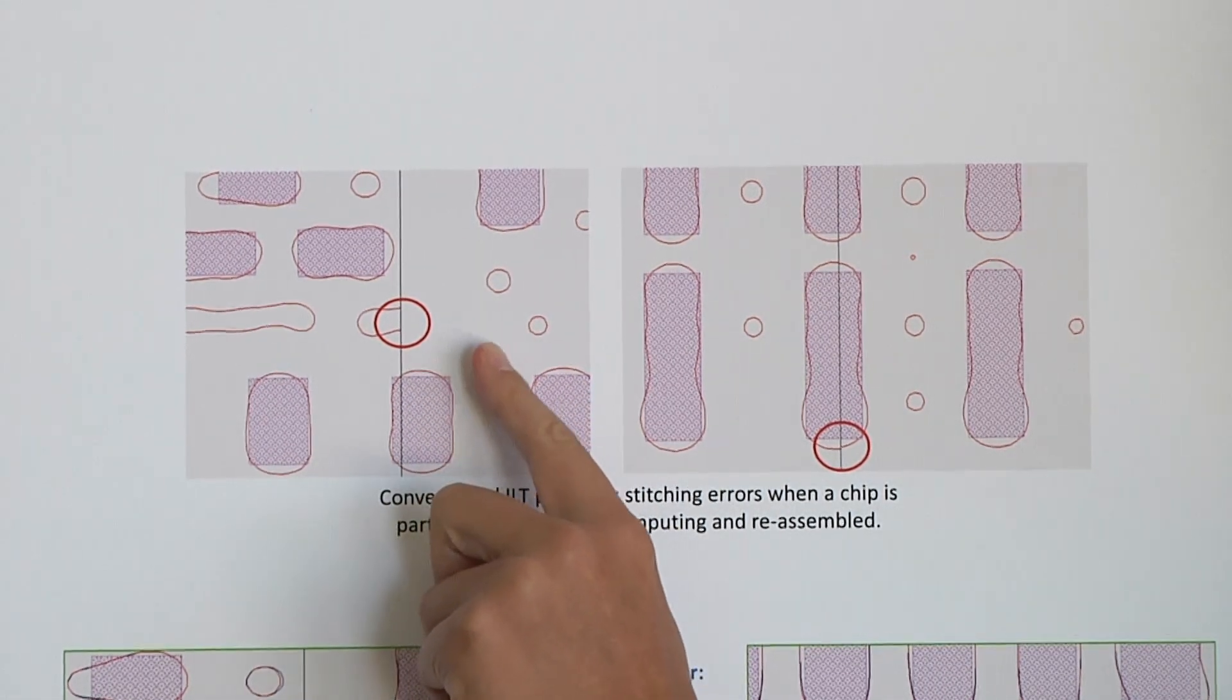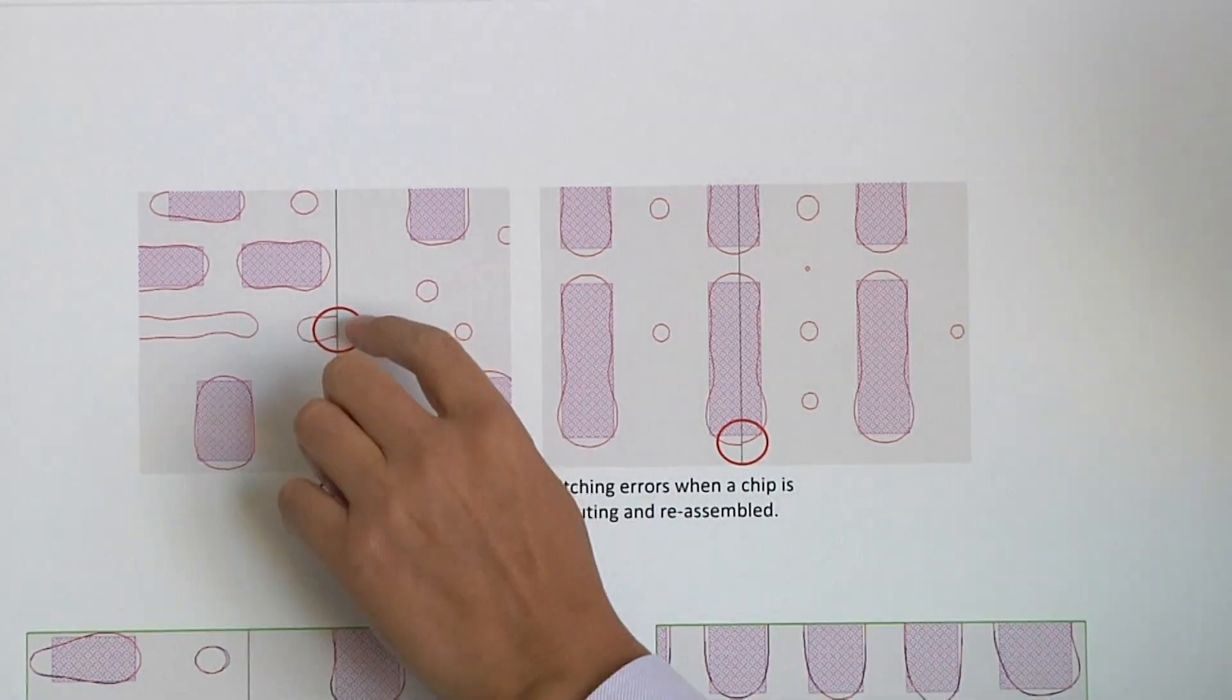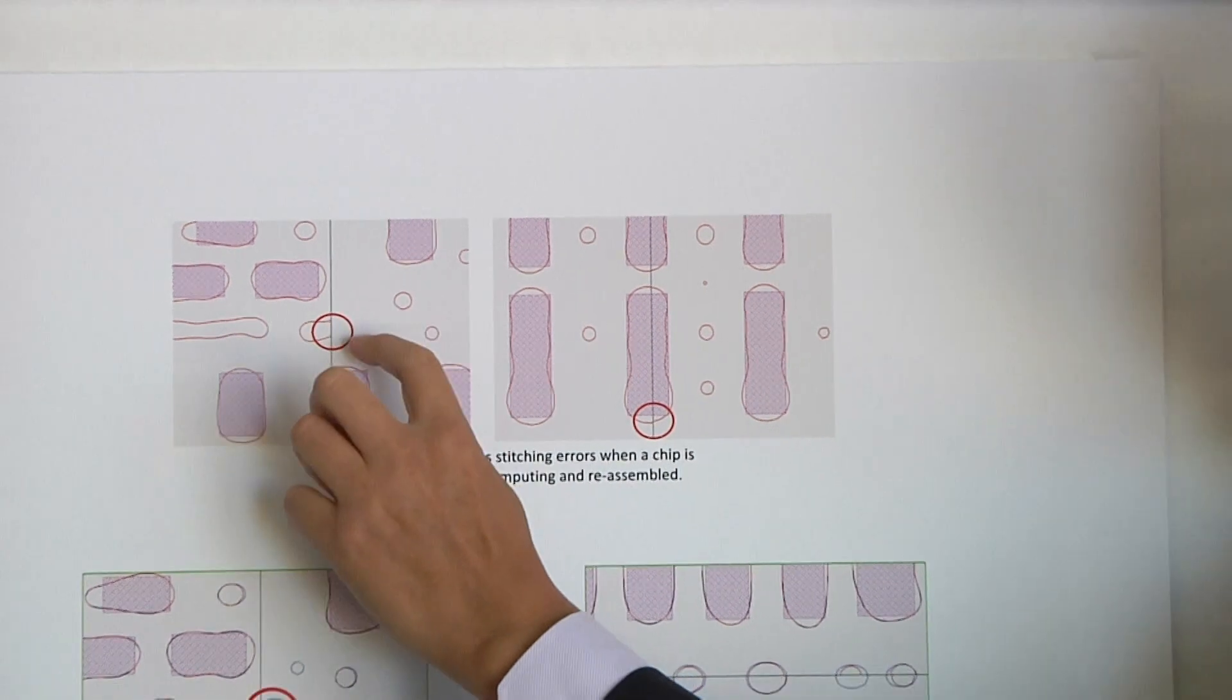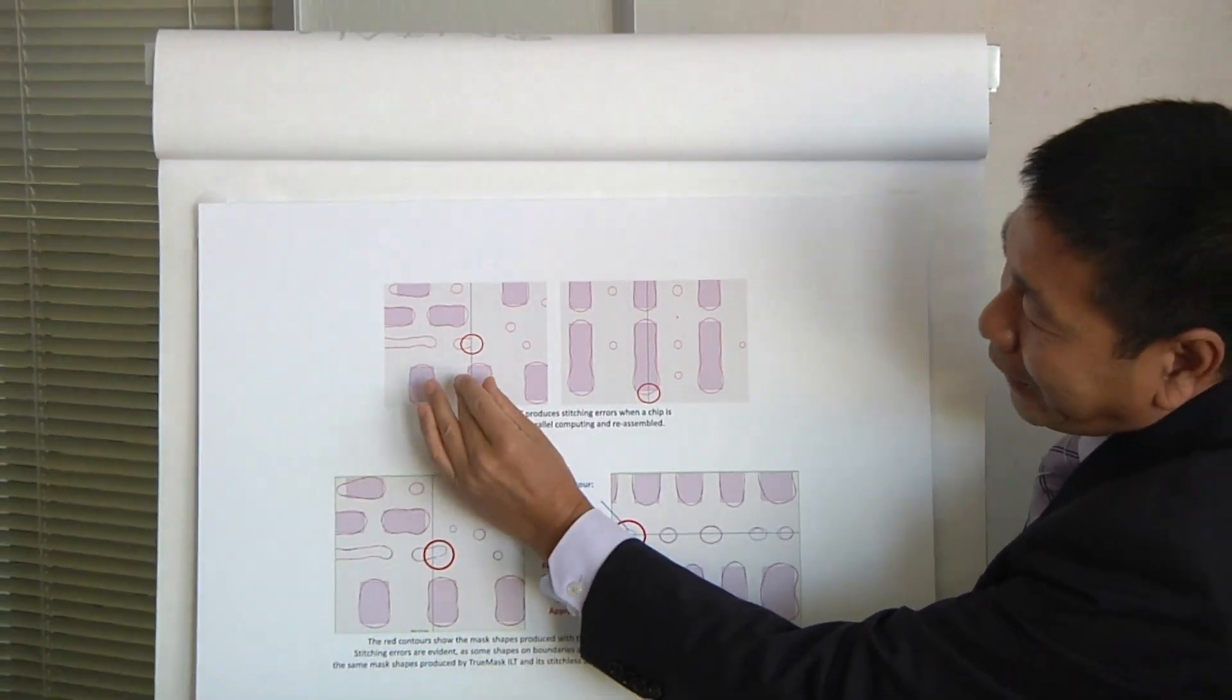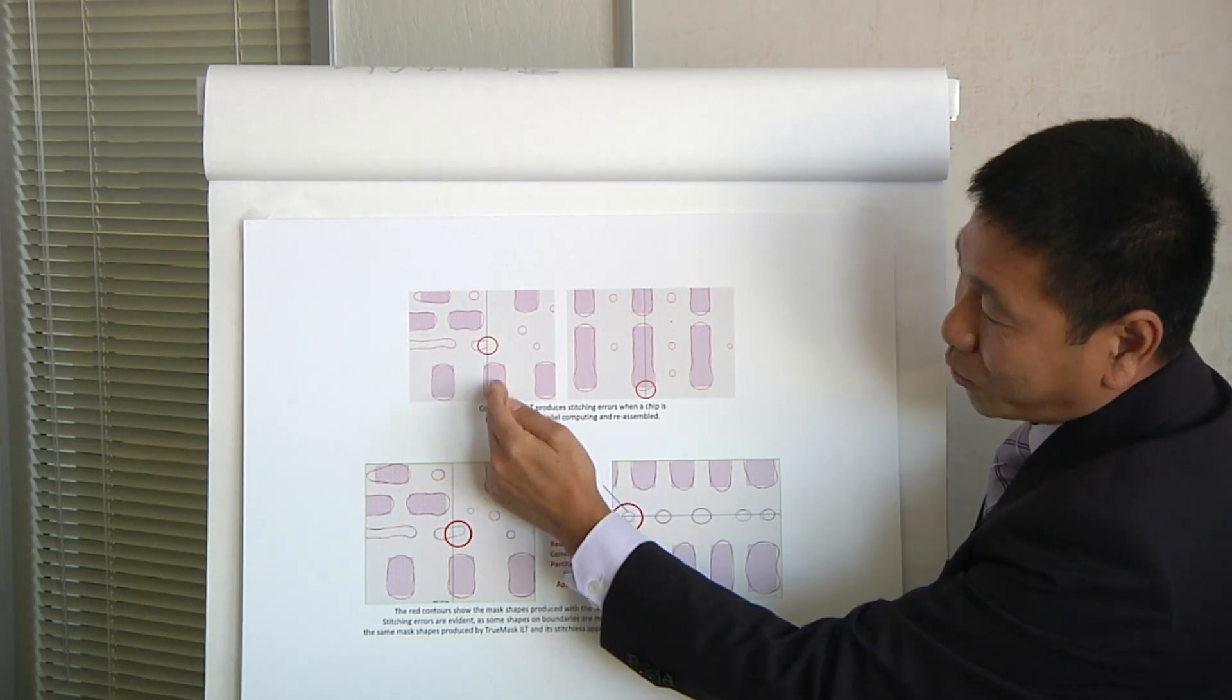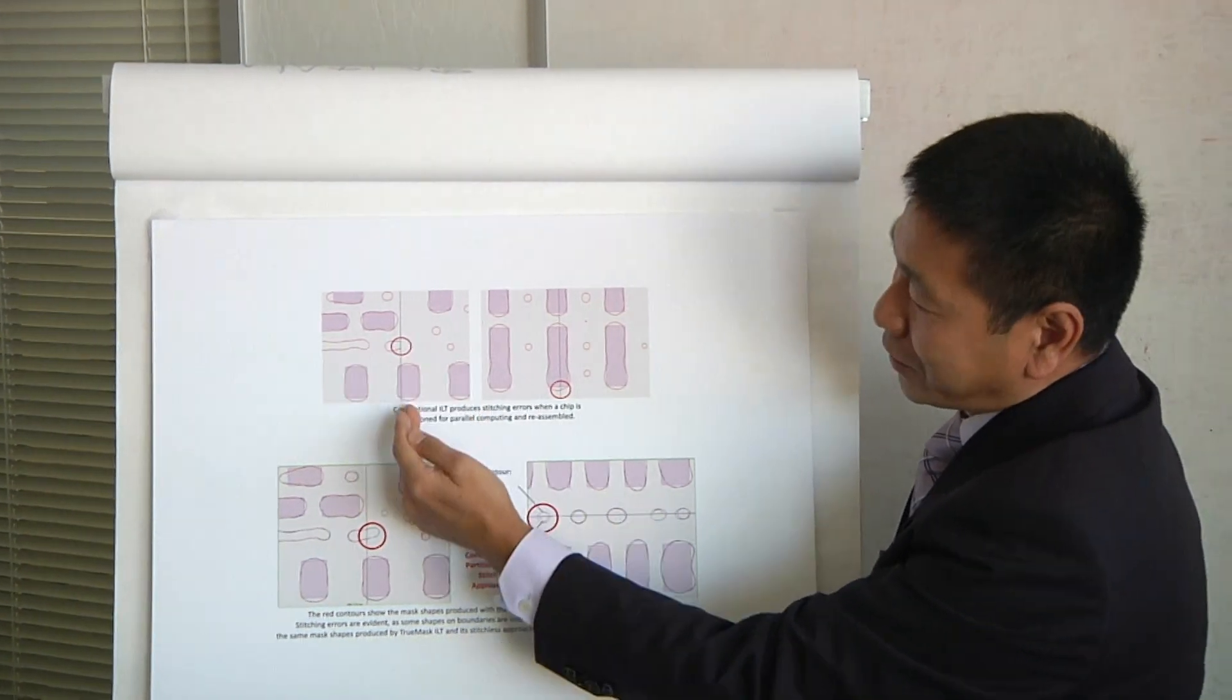But you look at the ILT solution from the right partition, it actually didn't generate that assist feature. So that's why, when you put them together for full chip, then you get the issue on the boundary. That's called stitching error.